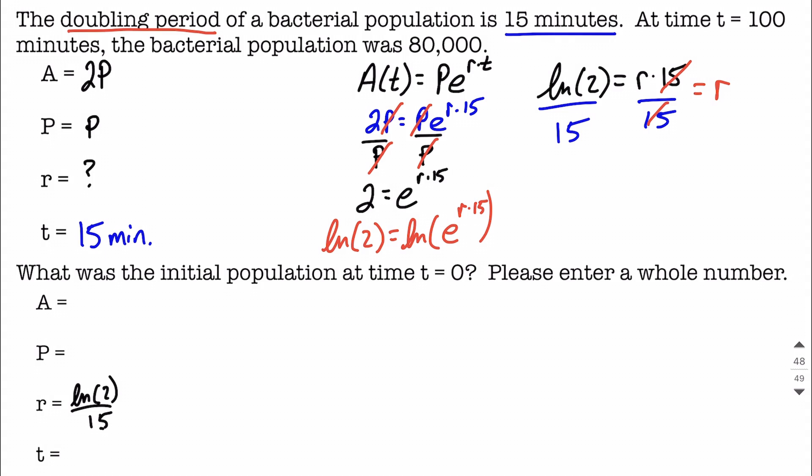So what was the initial population at time equals 0. The initial population, that's what you start with, that's asking what is p. Let's use those other pieces of information that they gave us from the beginning. They said at time t equals 100 minutes, population was 80,000. So filling those pieces of information in, 100 minutes is a value for our time, staying consistent that we're in minutes throughout. And then our accumulated amount, how much this has grown up to, would be 80,000 goes in for A.